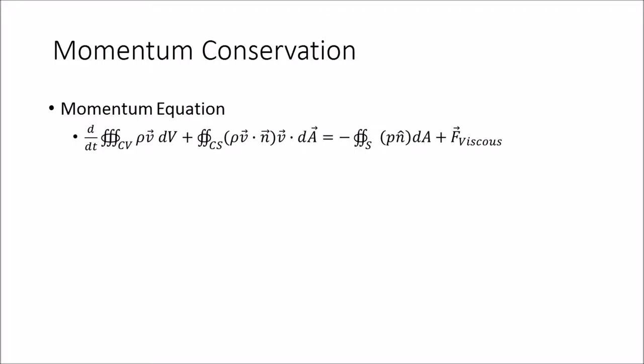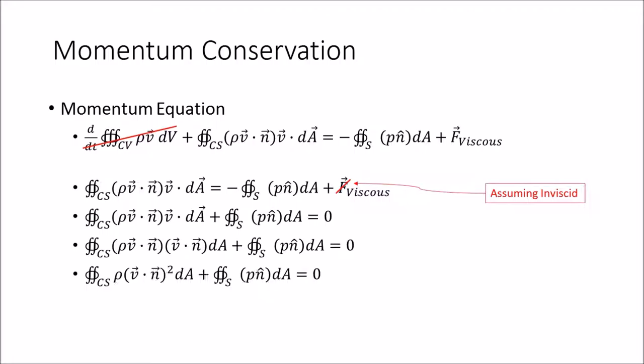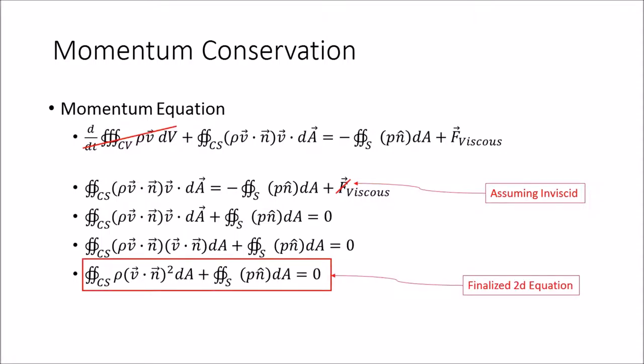The second equation which governs incompressible flow is the momentum equation. As seen here, there is also a part of the momentum equation that is differentiable with time, and given our steady flow assumption that will go to zero. For the purposes of our examples we are also going to assume inviscid flow, and therefore the viscous force from the fluid will go to zero as well. From here we can simplify the equation for our 2D examples, leaving us with the finalized two-dimensional momentum equation.